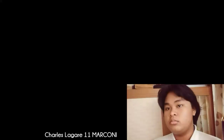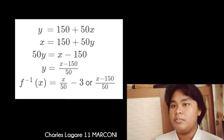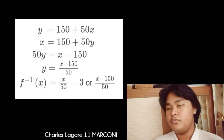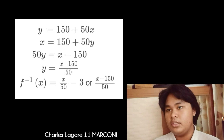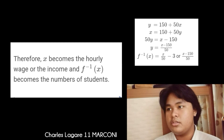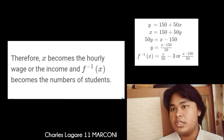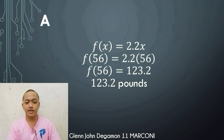For number 9, y equals 150 plus 50x. To find the inverse function, swap variables: x equals 150 plus 50y. Transpose 150: 50y equals x minus 150. Divide both sides by 50: y equals x minus 150 over 50, or x over 50 minus 3. Therefore, the inverse function of x equals x minus 150 over 50. In the inverse function, x becomes the hourly wage or income, while the inverse function of x gives the number of students.